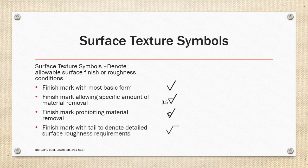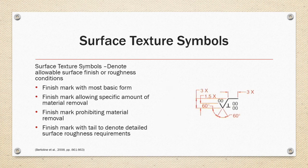And the final and most complicated version of the finish mark will have a tail as shown on the right and will denote detailed surface roughness requirements. Please note the dimensional requirements of the finish mark which is sized by the proportions of the drawing text height. Refer to pages 861 through 863 in the text for more information on the elements of finish marks.